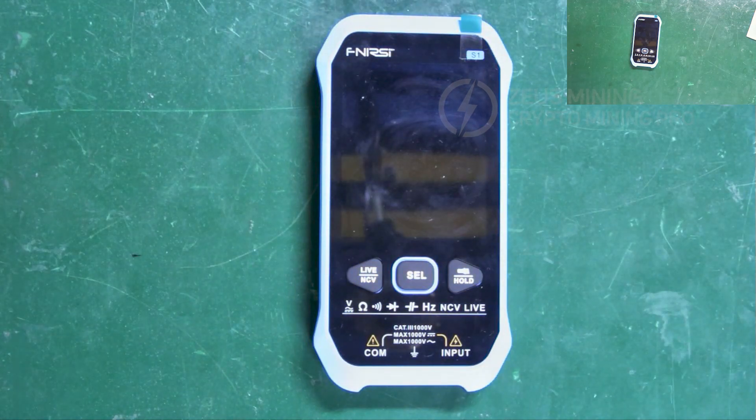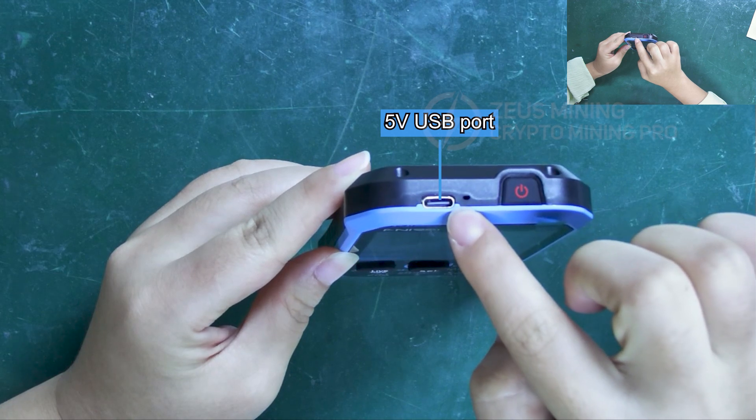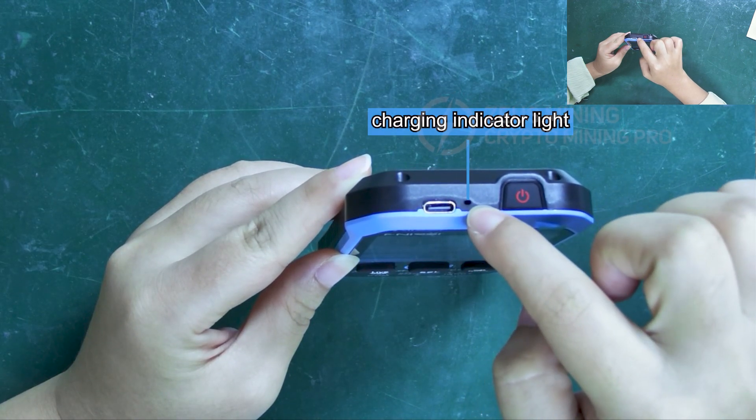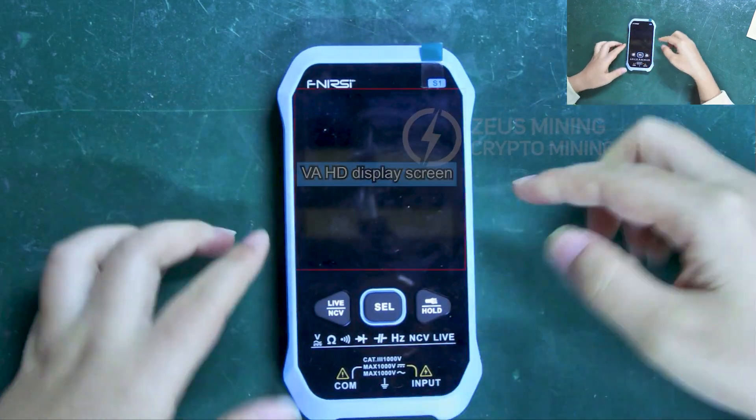Now let's go over the function buttons on this multimeter. Here is the 5 volt USB port, the charging indicator light, and the power on/off button.